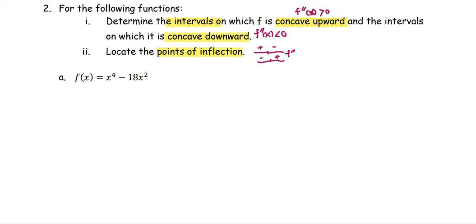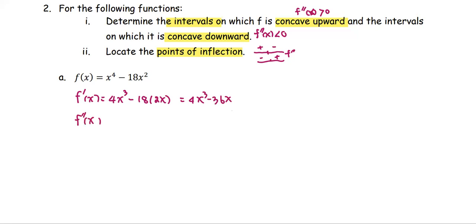For example a, the function f(x) equals 8x to the fourth minus 18x squared. We find the first derivative, which is 4x to the third minus 36x, and then find the second derivative, which is 12x squared minus 36.